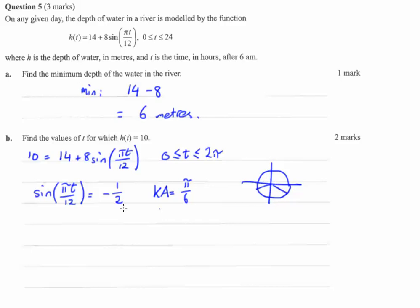Now we have something to work with. So we want pi t on 12 to equal pi plus pi on 6, which is 7 pi on 6, or 2 pi minus pi on 6, which is 11 pi on 6.